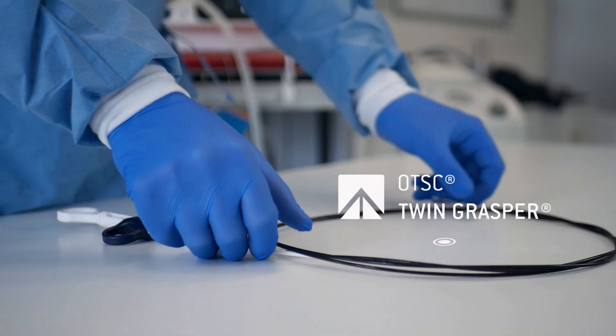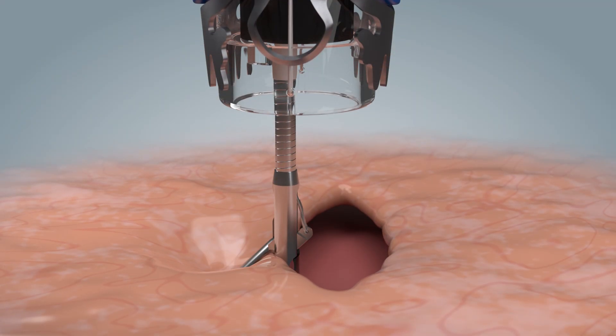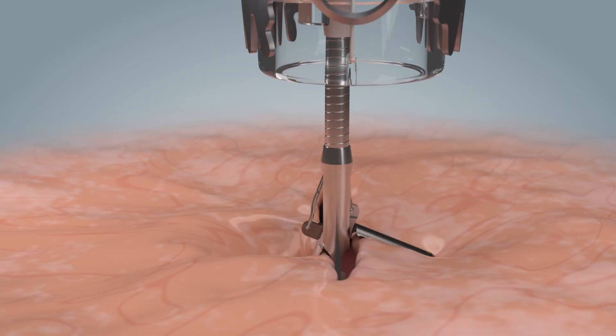The OTSC twin grasper, with its two separately controllable jaws, supports controlled closure of lesions, enabling closure from serosa to serosa.